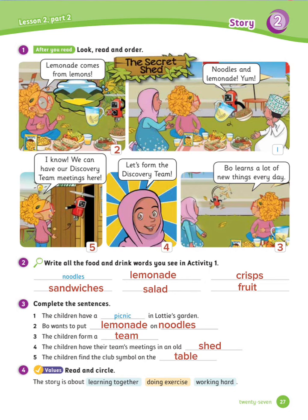Exercise number 4: Read and circle. Circle the correct answer. The story is about learning together.